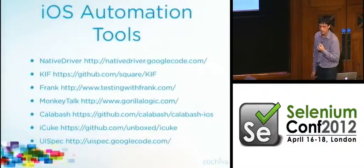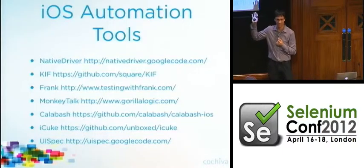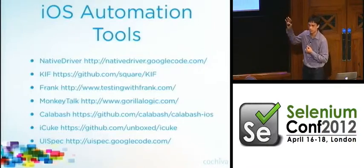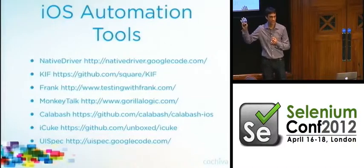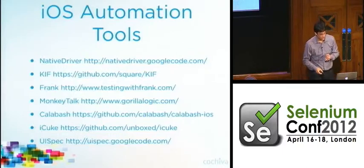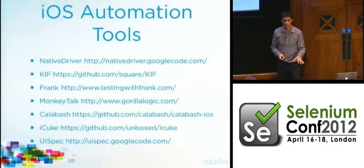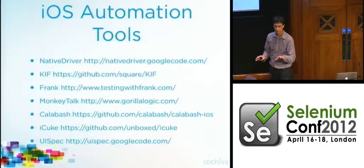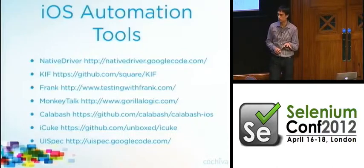Now a few questions: how many folks here are working on or have worked on a web application? Okay, just about everybody — that's good. How many have found a satisfactory web automation tool? Okay, I think we should ask security to escort anybody off the premises who didn't raise their hand the second time. Now, how many of you are working on a native mobile application? A few, maybe 20 or so. And how many of you found a satisfactory automation tool for those native apps?